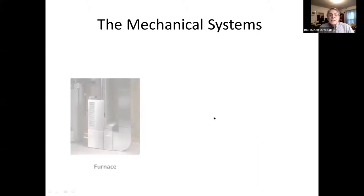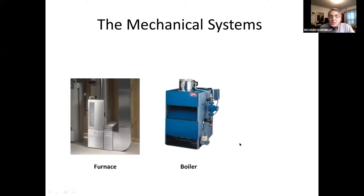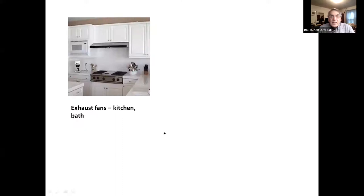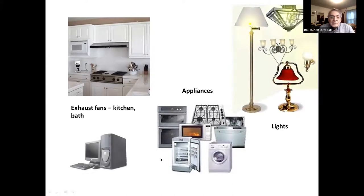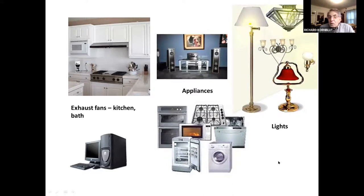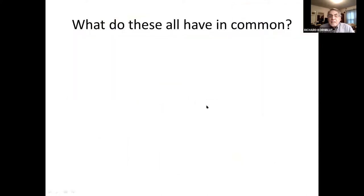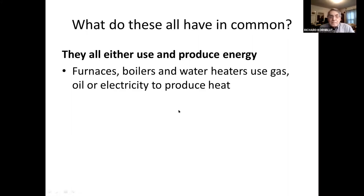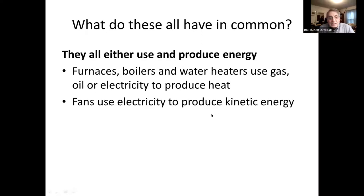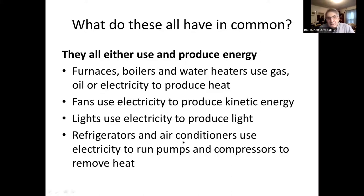When we talk about the mechanical systems, we're talking about furnaces, boilers, water heaters, kitchen fans and bath fans, appliances, lights, computers — all appliances, basically. What they all have in common is that they all use and produce energy. Furnaces and boilers use gas, oil, or electricity to produce heat. Fans use electricity to produce kinetic energy. Lights use electricity to produce light. Refrigerators and air conditioners use electricity to run pumps and compressors to remove heat.